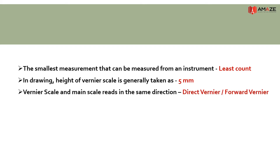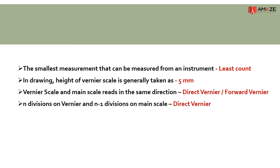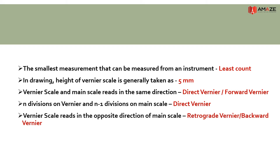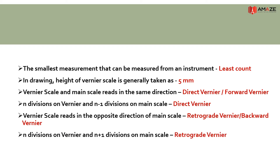When the vernier scale and main scale move in the same direction, it is a direct vernier or forward vernier. A direct vernier has N divisions of vernier equal to N minus 1 divisions on the main scale. When the vernier scale and main scale move in opposite directions, it is a retrograde vernier or backward vernier. A retrograde vernier has N divisions of vernier equal to N plus 1 divisions on the main scale.